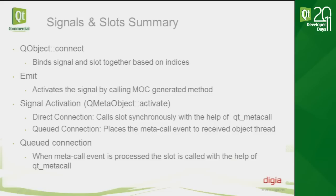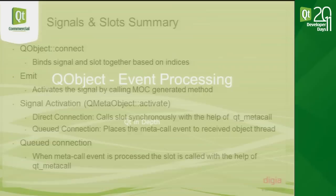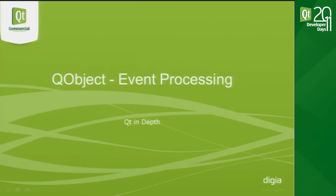Summary of signal/slots: QObject::connect() binds signal and slot together based on indexes. Emit activates the signal by calling the MOC-generated method. For direct connections, QMetaObject::activate() calls the slot synchronously via qt_metacall(). For queued connections, it places a meta-call event to the receiver object's thread, which is processed once the event loop executes and the slot is called. Regarding parameter count: a slot can have fewer parameters than the signal — the extra signal parameters are ignored. But the slot cannot have more parameters than the signal.